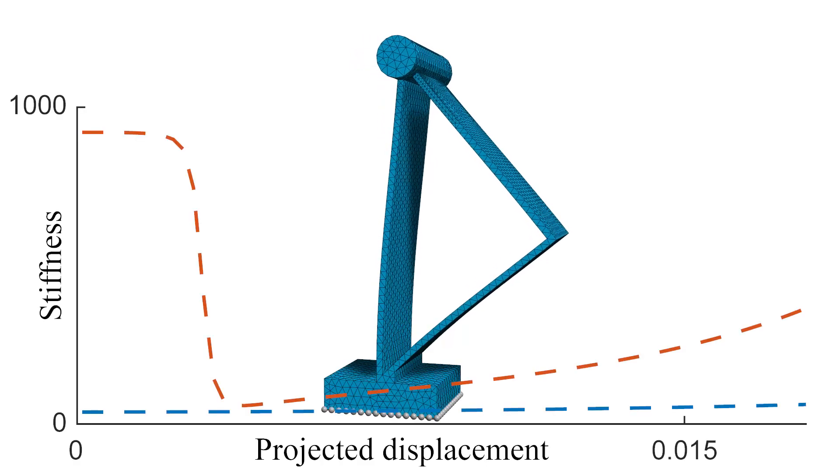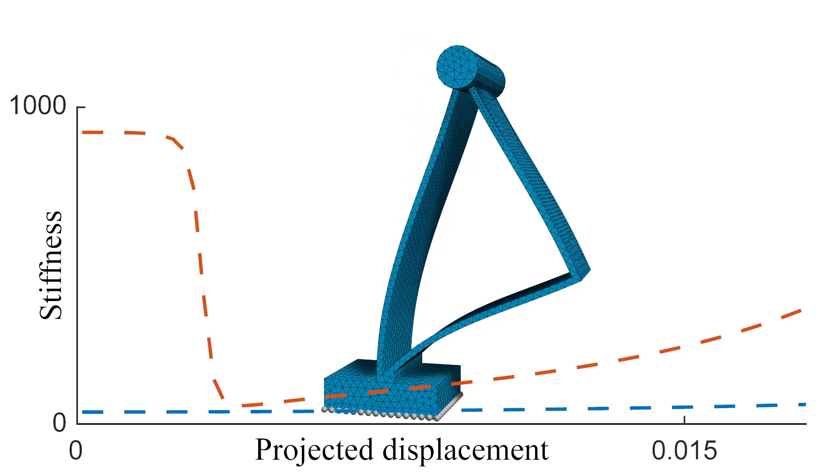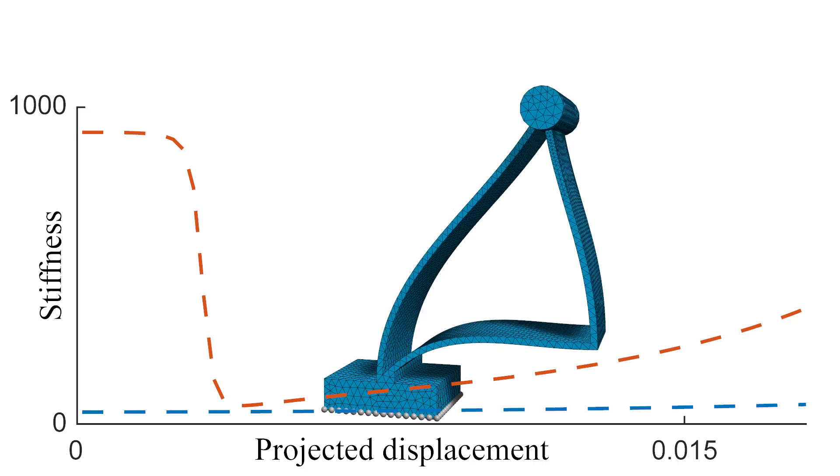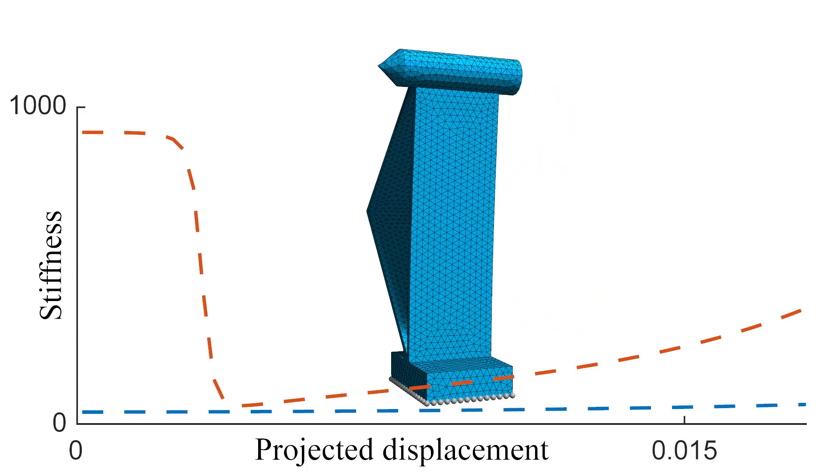A linear eigenanalysis seems to confirm this design intent, with the first non-rigid mode indicating a compliant direction for axial bending, while the second mode corresponding to twisting is several times stiffer.